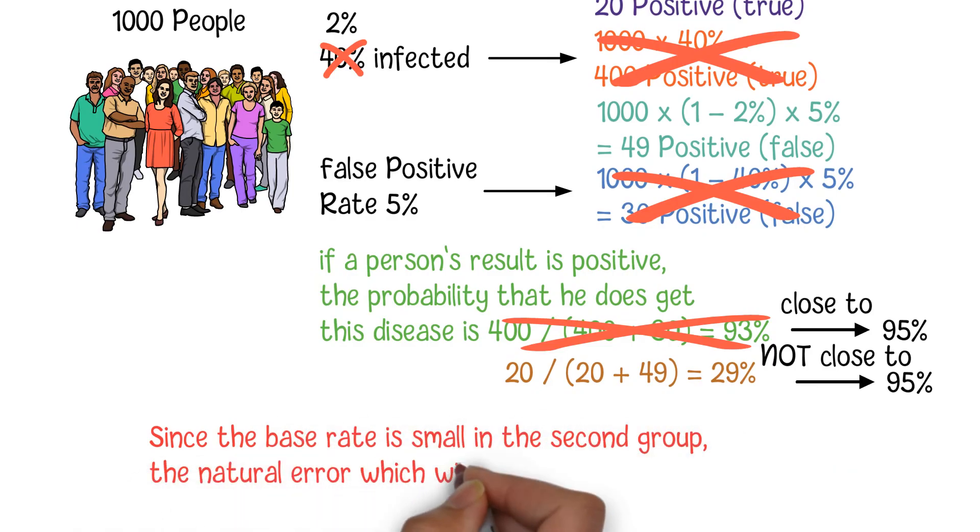Since the base rate is small in the second group, the natural error which will take precedence in the final result.